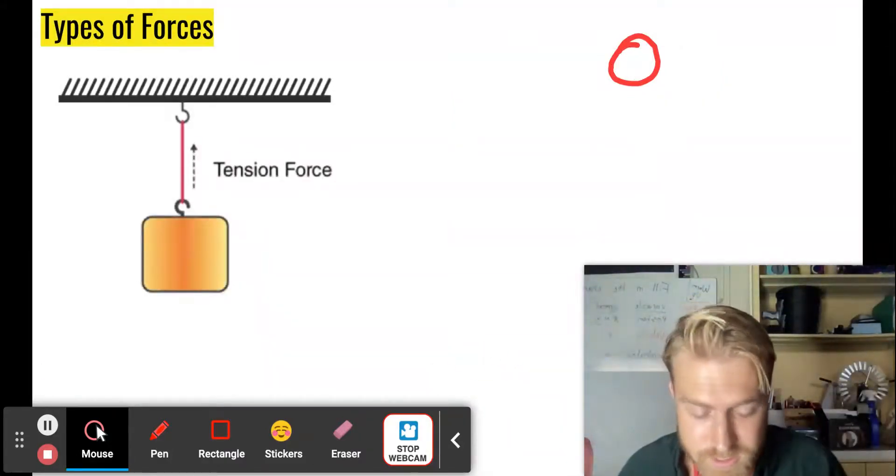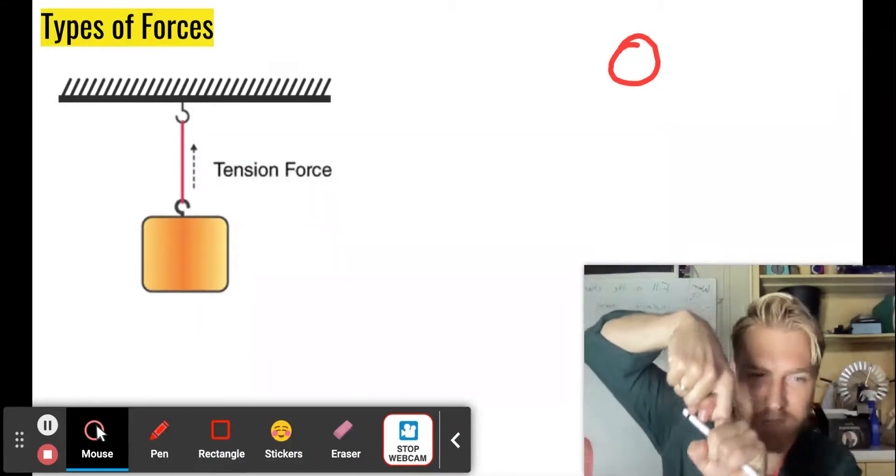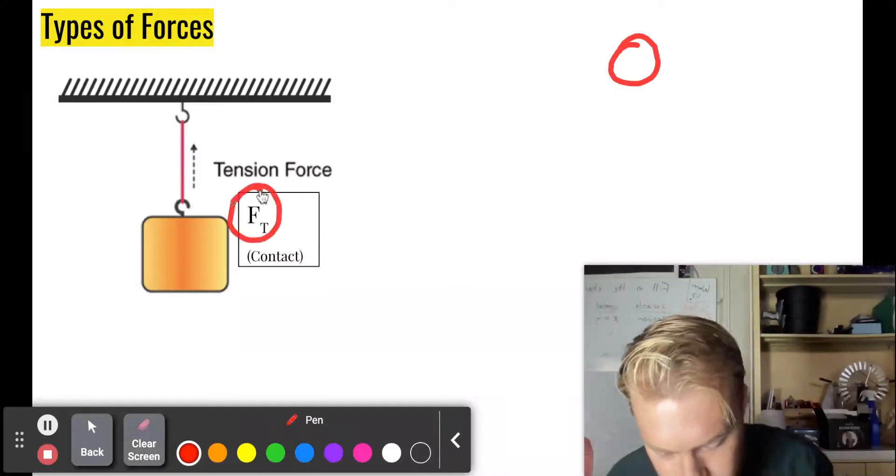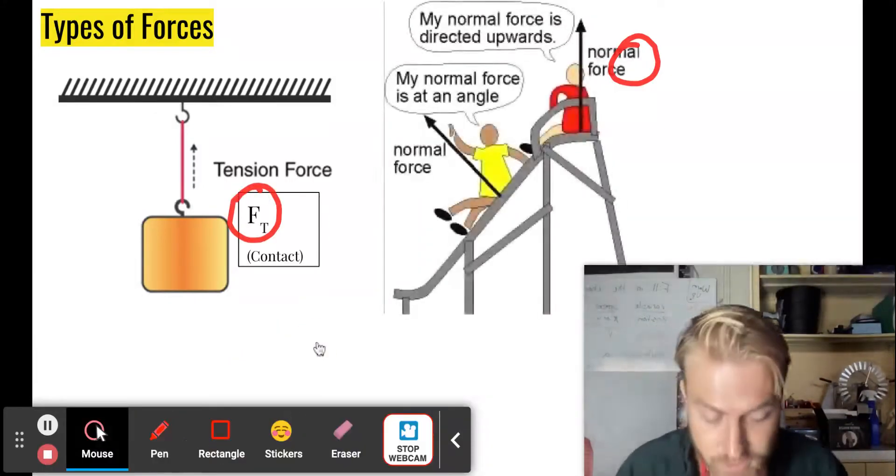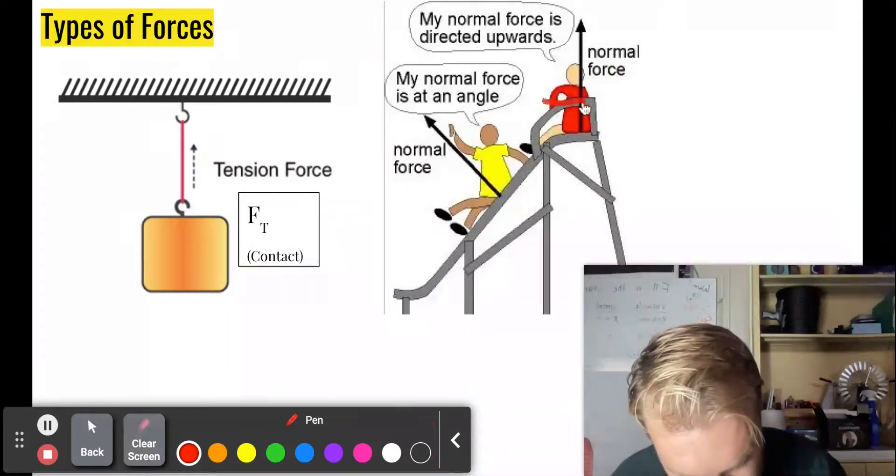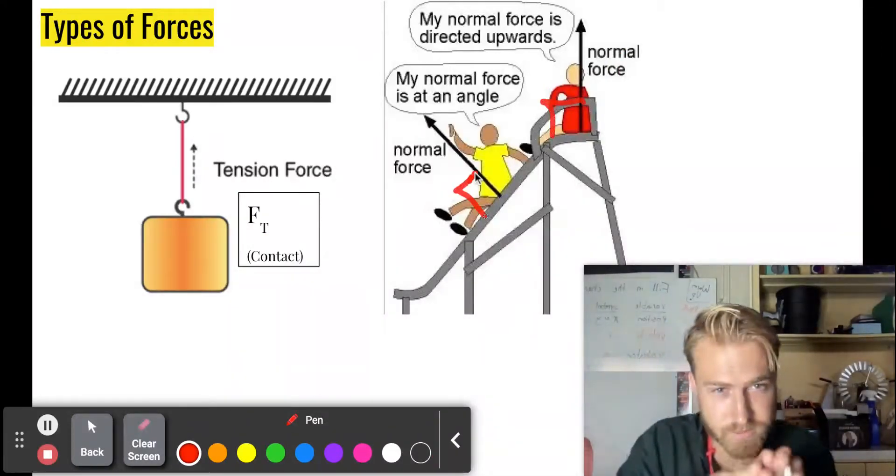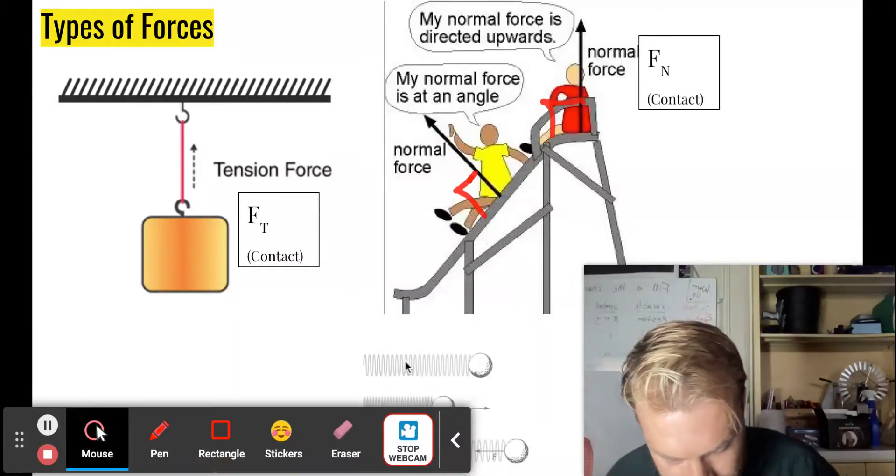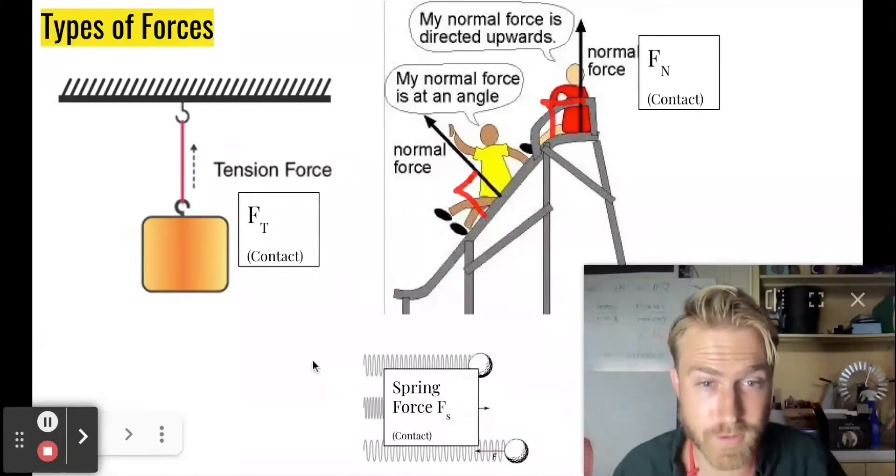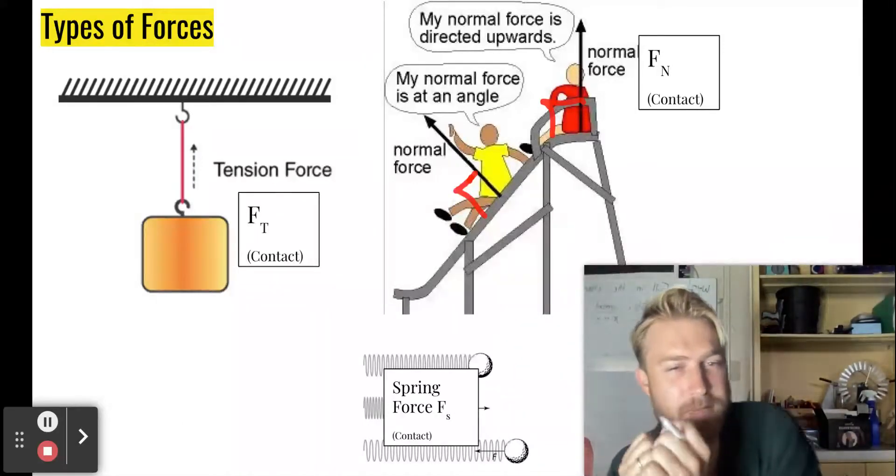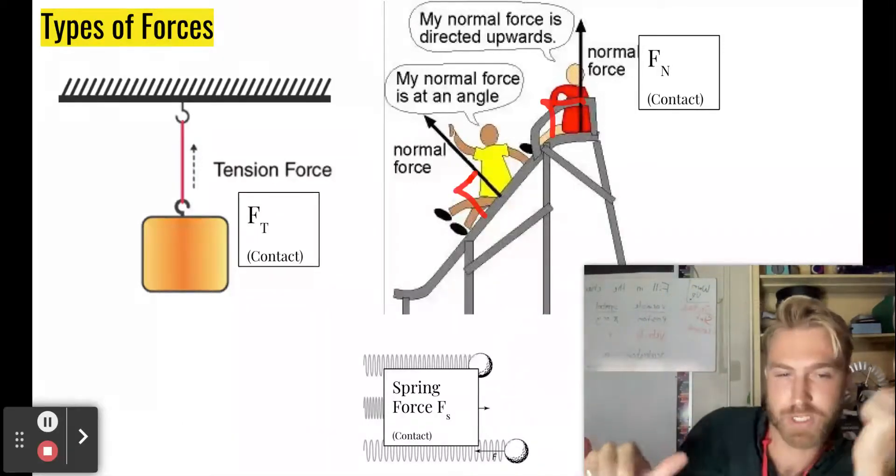We got tension force. That's a force exerted through strings, ropes, chains, things like that. F sub T. We've got the normal force, which we talked about before. See those right angles there? That's the surface of that slide pushing up on those kiddos. And then we've got lastly, the spring force, F sub S. You know, if a spring's stretched, it's going to pull something back or if it's compressed, it's going to push it back the other way.